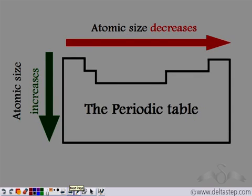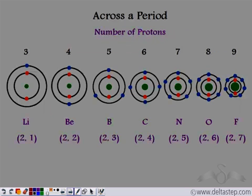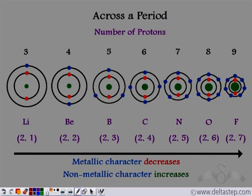How does metallic character vary in a periodic table? Atomic size decreases when we move from left to right in a period, and atomic size increases when we move from top to bottom in a group. In a period, since the atomic size decreases, the outermost shell is very close to the nucleus. So removing an electron becomes very difficult because the nucleus exerts a very strong pull on the outermost electrons. Therefore, the ease to remove electrons decreases, and thus the metallic character decreases. Since metallic character decreases, the non-metallic character increases across a period.